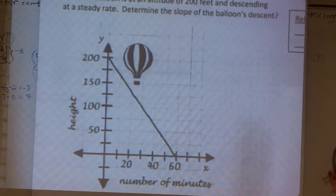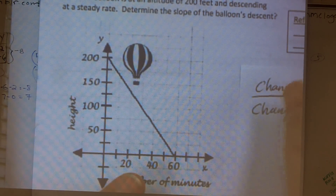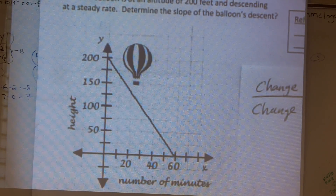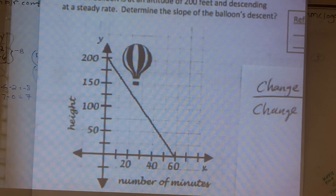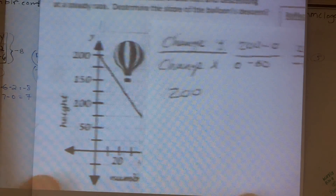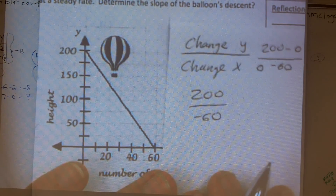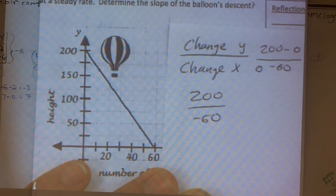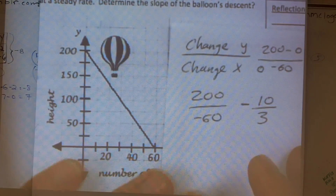Rate of change is the change in y over the change in x. So the change in y was 200 minus zero, which is 200. Over the change in x — x started at zero and went all the way out to 60, so that becomes negative 60. My rate of change is 200 over negative 60, which reduces down to negative 10 over 3.